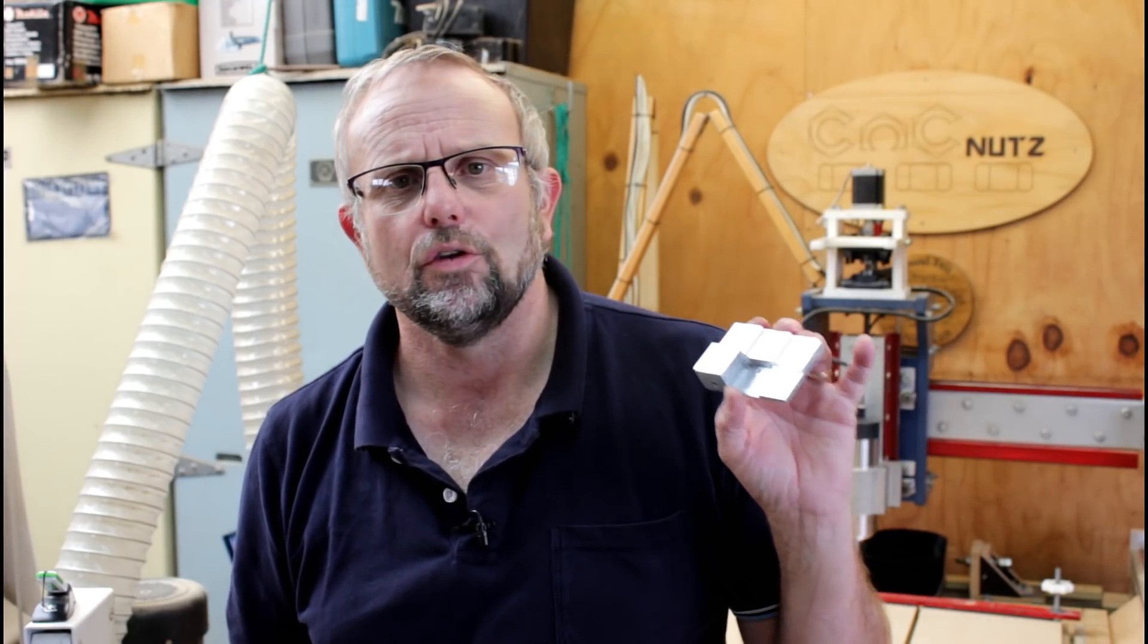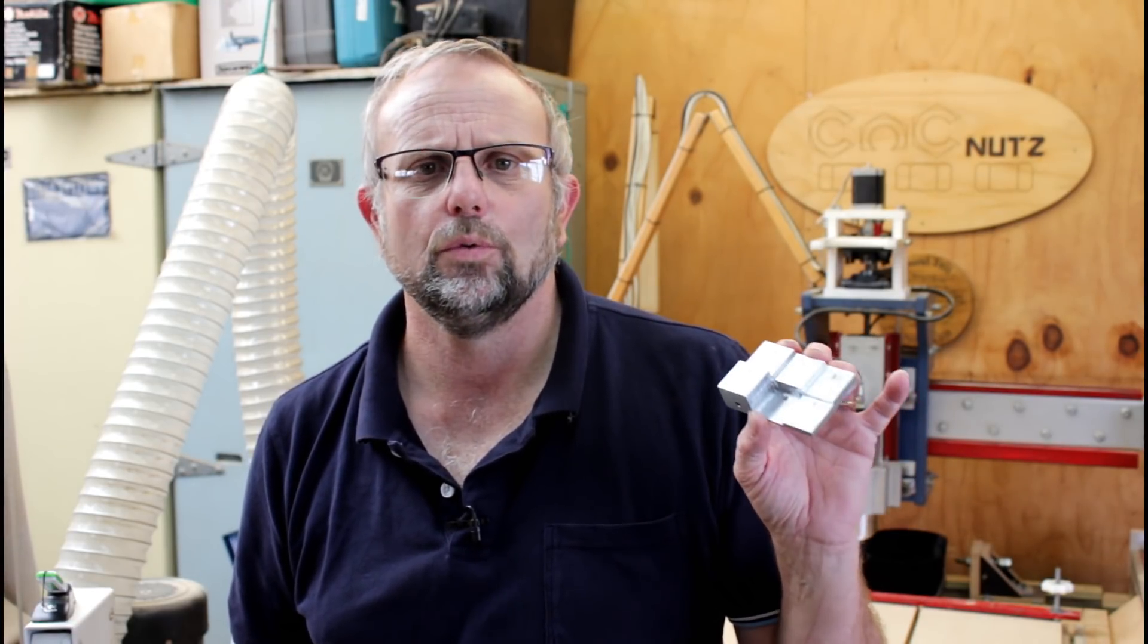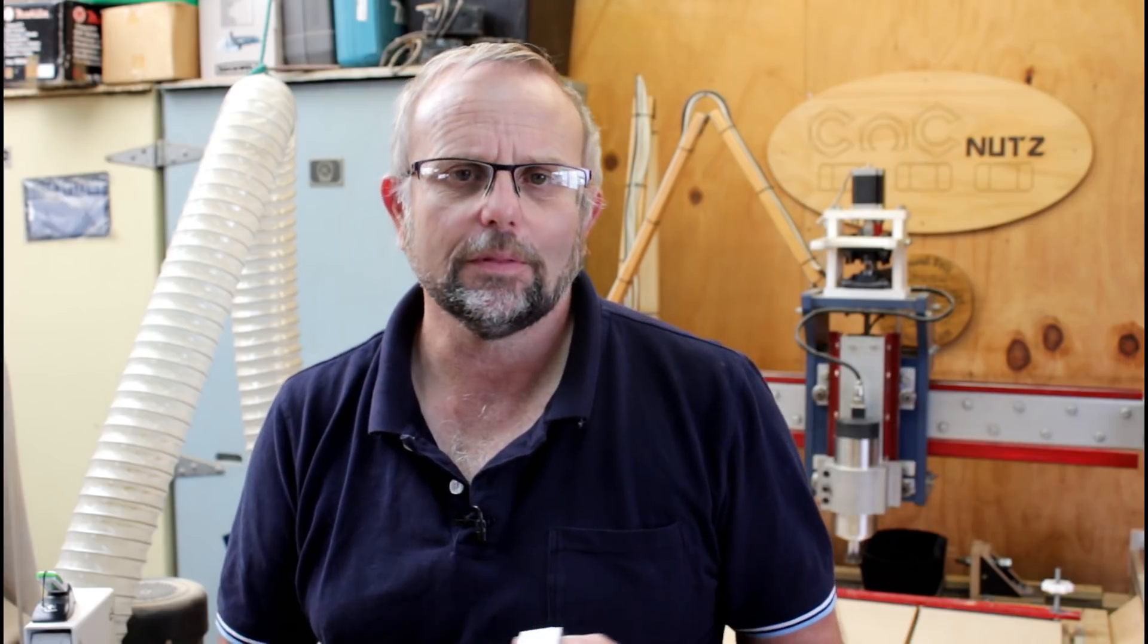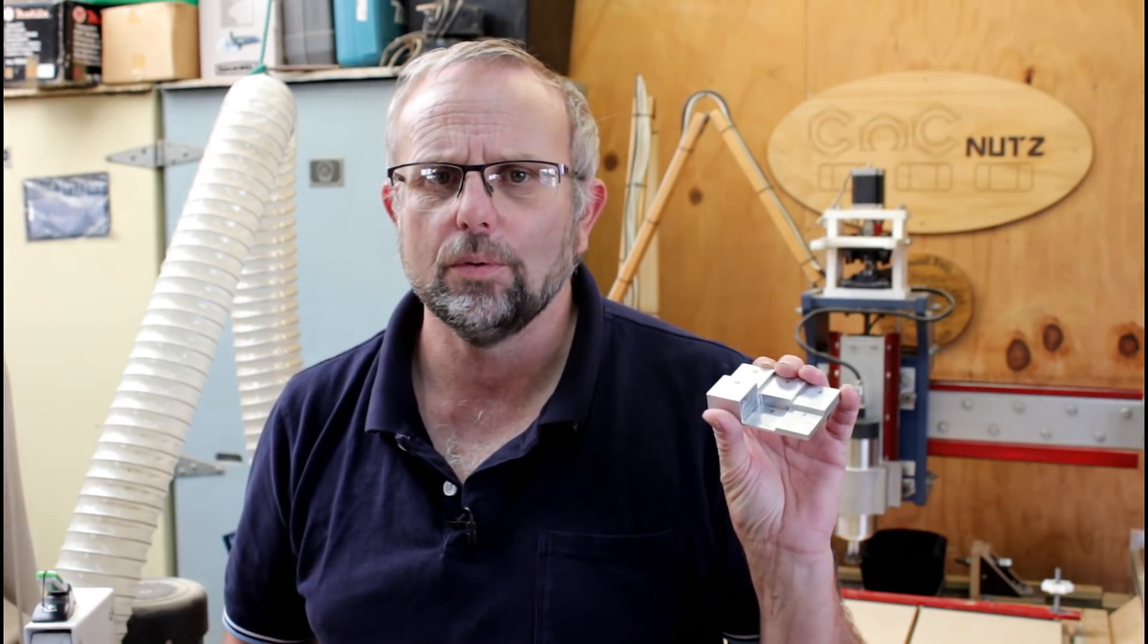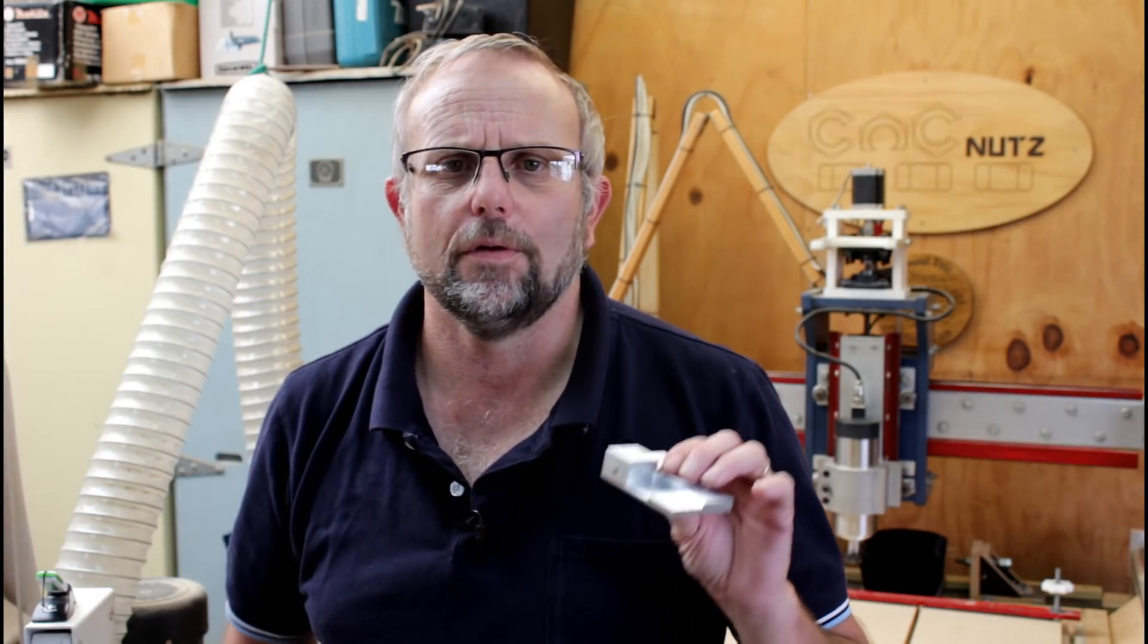I came up with this little idea. I call it the Nominal Thickness Tool Setting Gauge. This will allow me to set it on the stock, touch-off, and it will automatically set my cutter to zero. If I set it down onto the spoil board, I can touch-off on this as well, and it will automatically set my cutter to zero, referenced from the spoil board.